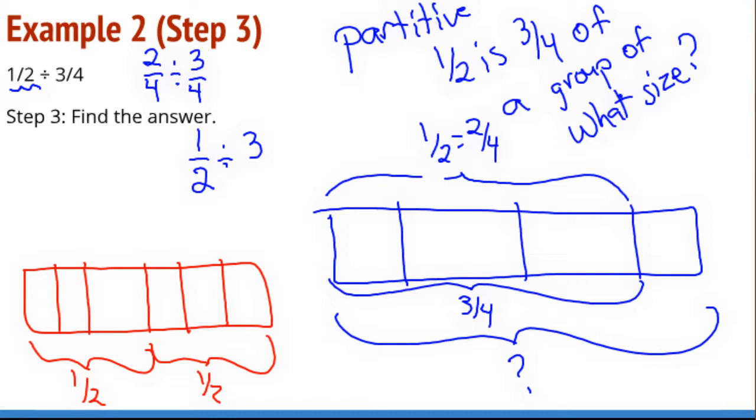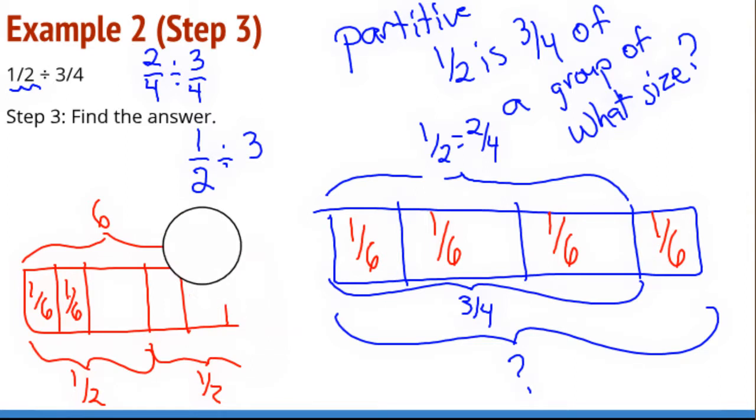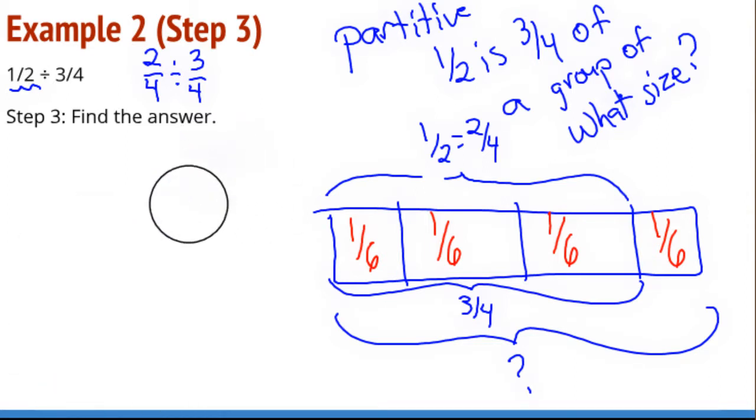I can see that my half divided by three is, there are six total pieces in the whole, so each of these is one-sixth. So I've got one-sixth, one-sixth, and one-sixth. And of course, this last one will be one-sixth. So I had to do a little bit of reasoning here. It wasn't quite as friendly as some of the other problems that we have worked on. So I can see then that my whole is going to be four-sixths. So two-thirds divided by three-fourths is four-sixths. So half is three-fourths of four-sixths.